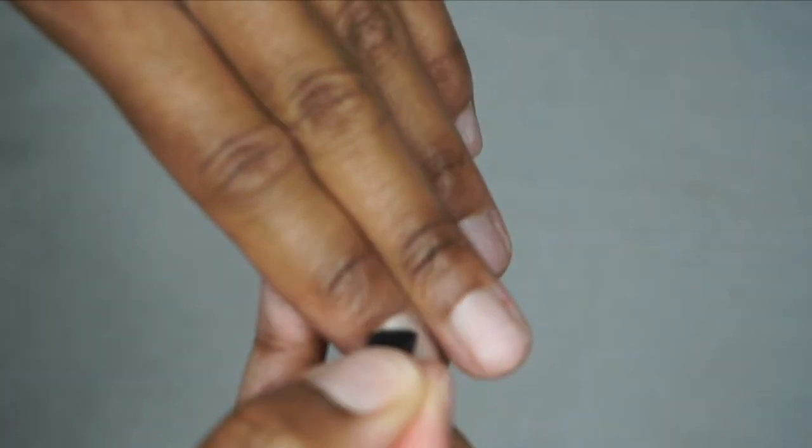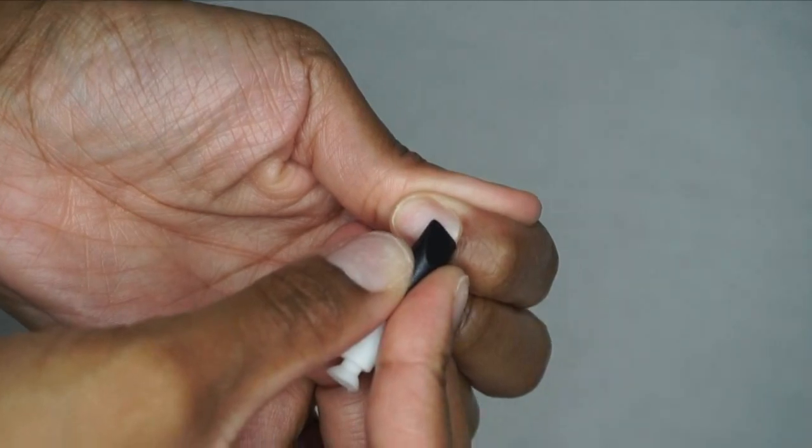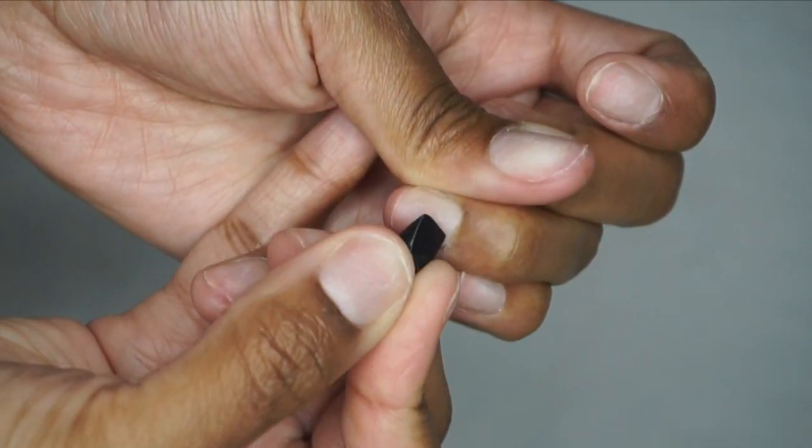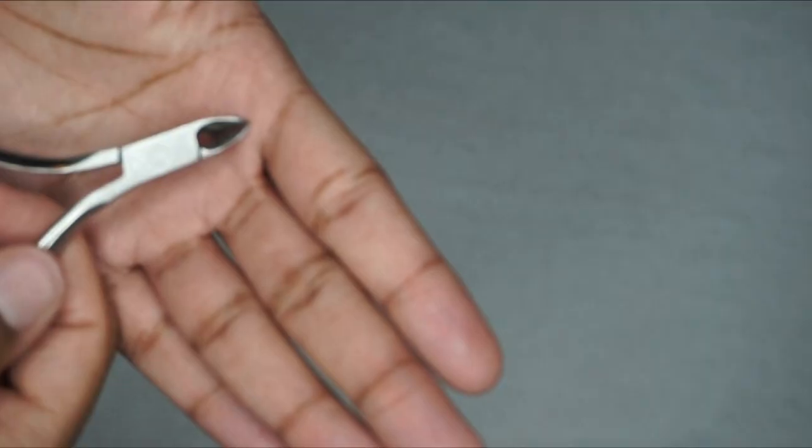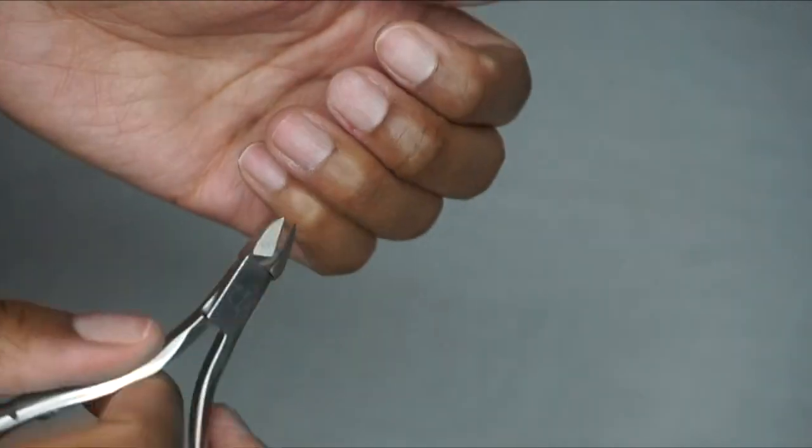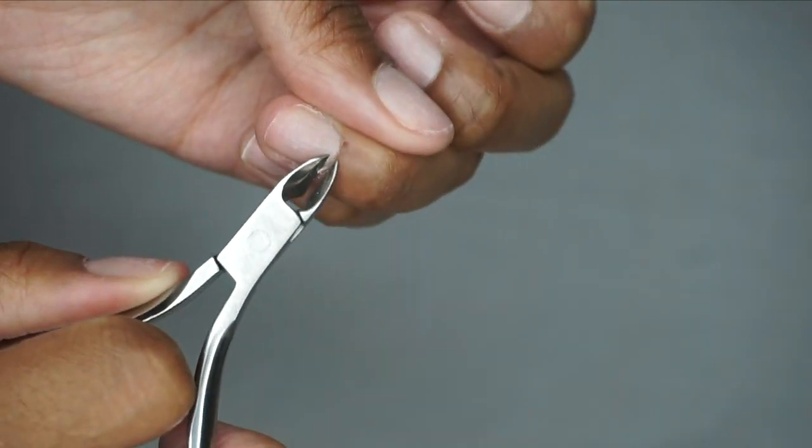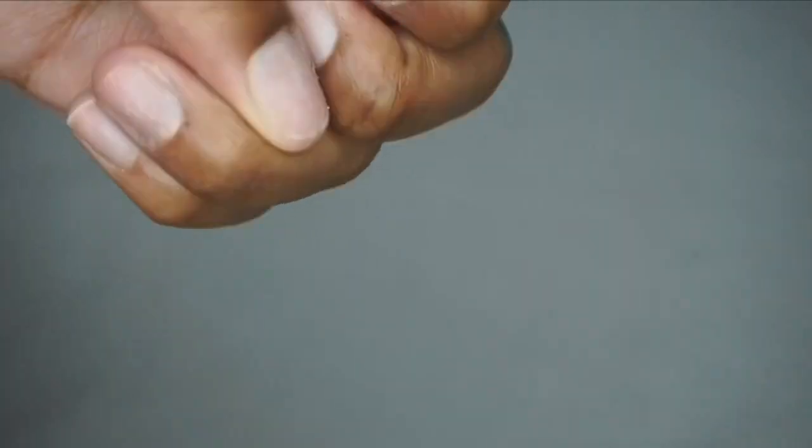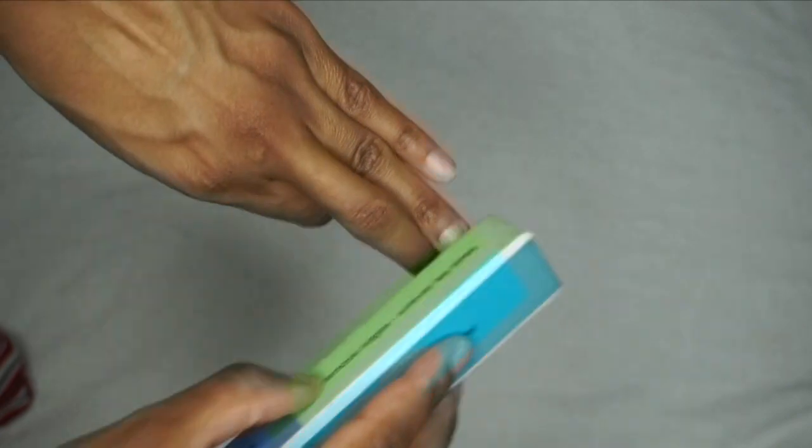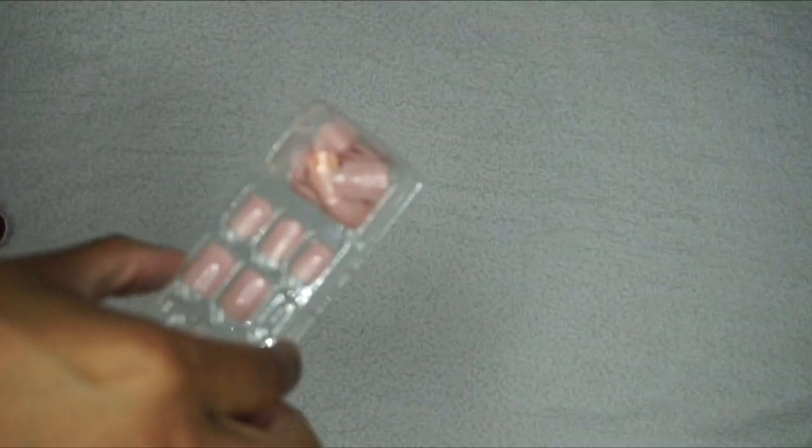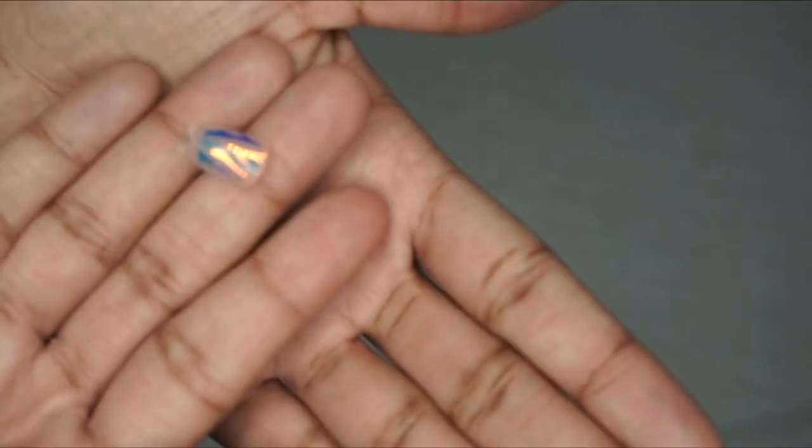Then you want to go ahead and push your cuticles back. For most of mine it was already done because I've been wearing press-on nails. And then whatever cuticles need to be removed, go ahead and do that now. So the last step before we actually apply the nail is just gently, lightly, I don't know what to say, file on top of the nail so you have a bit of a rugged top.